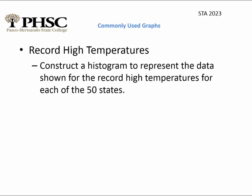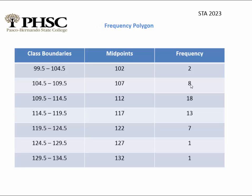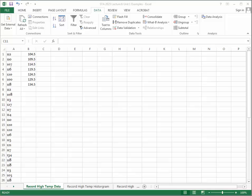I'm going to construct a histogram using raw data — record high temperatures for each of the 50 states. I already have the midpoints, class boundaries, and frequencies organized in a frequency distribution table, and I'll use that information to build the histogram.